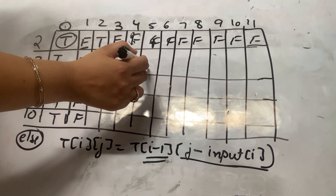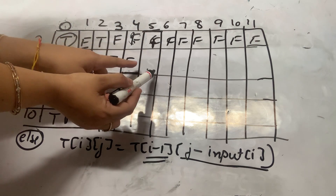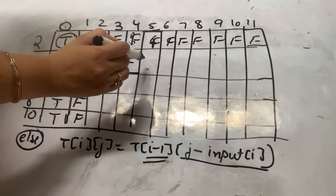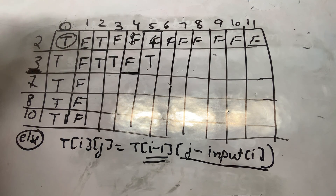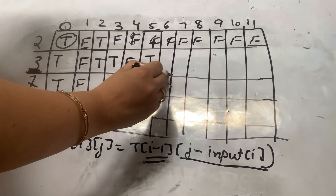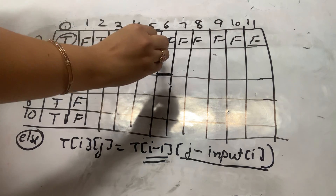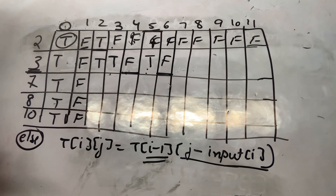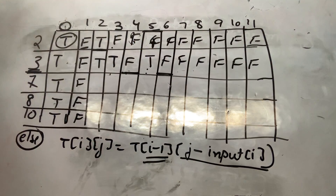For column 5 with element 3: go back 3 places in the previous row — that position is true, meaning 2 plus 3 can give a sum of 5. So this also becomes true. For column 6: go back 3 places in the previous row — that's false, so false. For columns 7 through 11, no sum is possible with elements 2 and 3 beyond 5, so all become false.